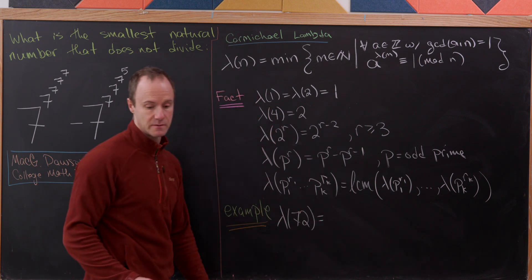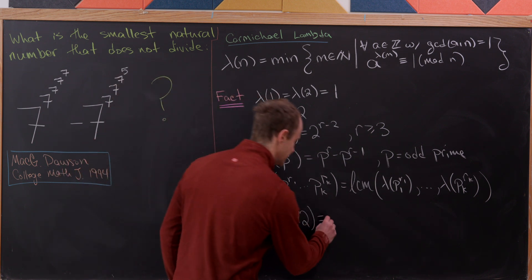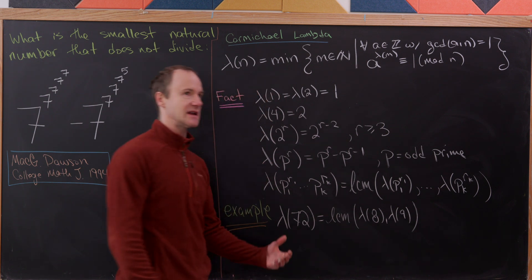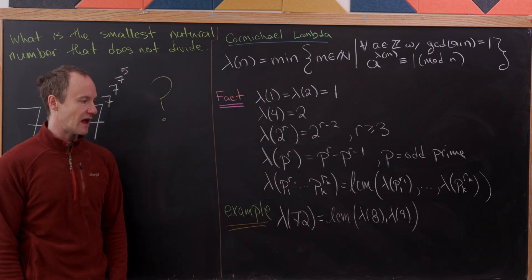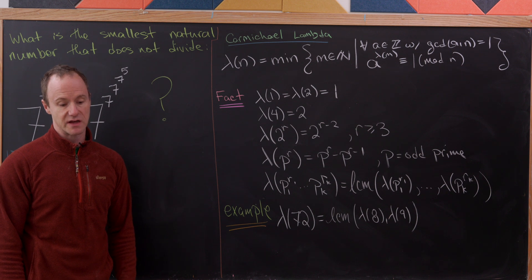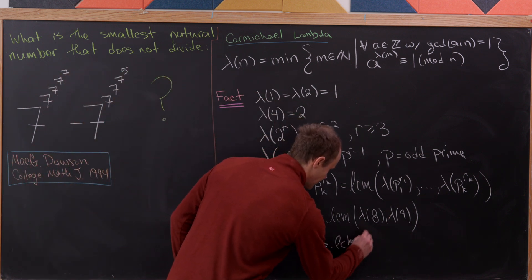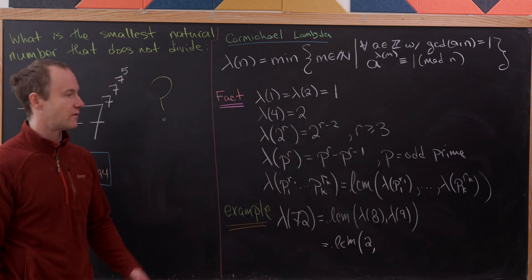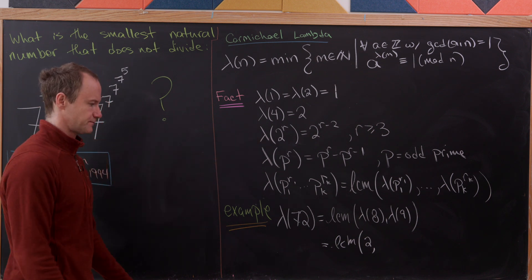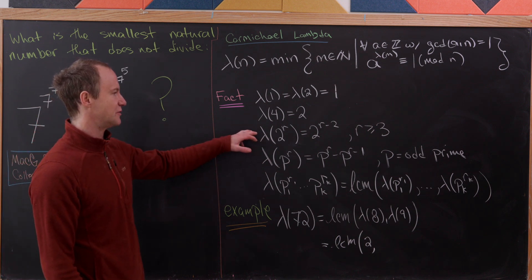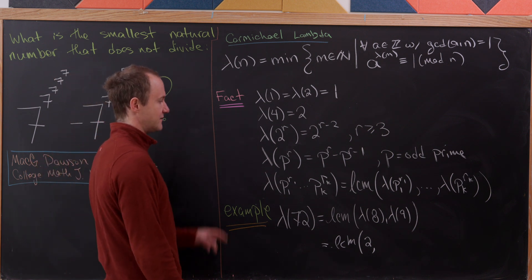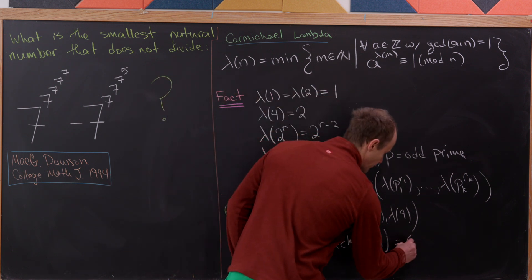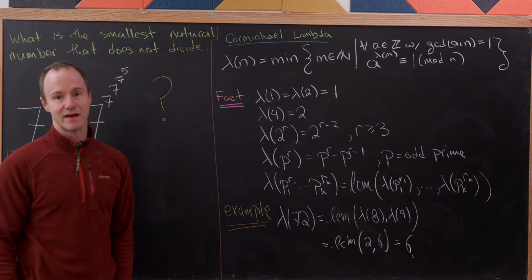For example, let's compute lambda of 72. We have 72 = 8 × 9, so lambda of 72 is the LCM of lambda of 8 and lambda of 9. Lambda of 8 equals 2 by our formula (8 minus 4), and lambda of 9 equals 9 minus 3, which is 6. The LCM of 2 and 6 is clearly 6, so lambda of 72 equals 6.